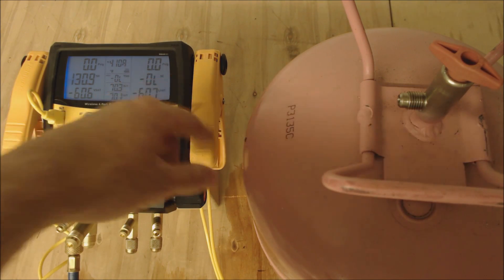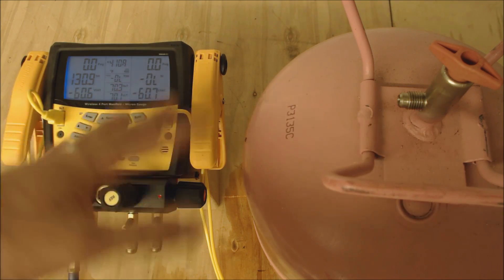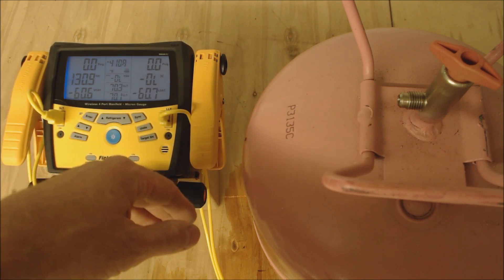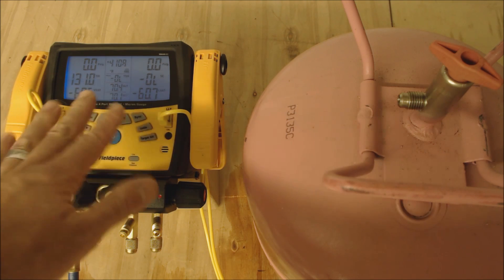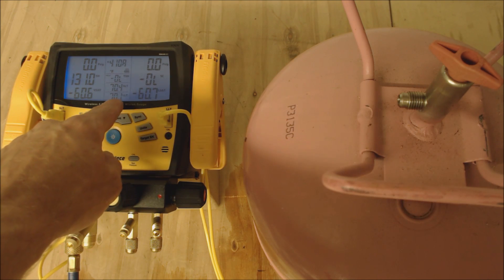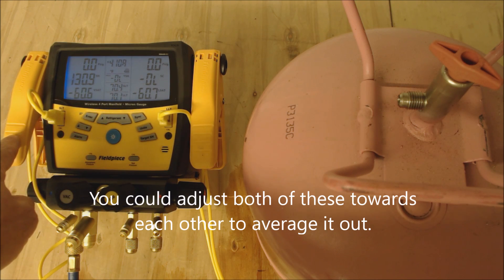Just so you know, I dried these temp clamps off and let them absorb the temperature in the room. It took quite a bit of time, but now they're 0.2 to 0.3 degrees off from each other. It says 70.2 on the liquid line temperature and 70.4 on the suction line temperature.